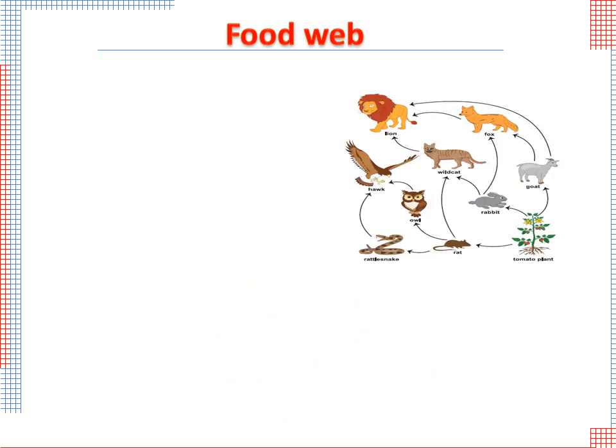Food web. Observe the figure. The figure shows how food chains overlap. This is what we call a food web. We can identify from this food web many food chains.